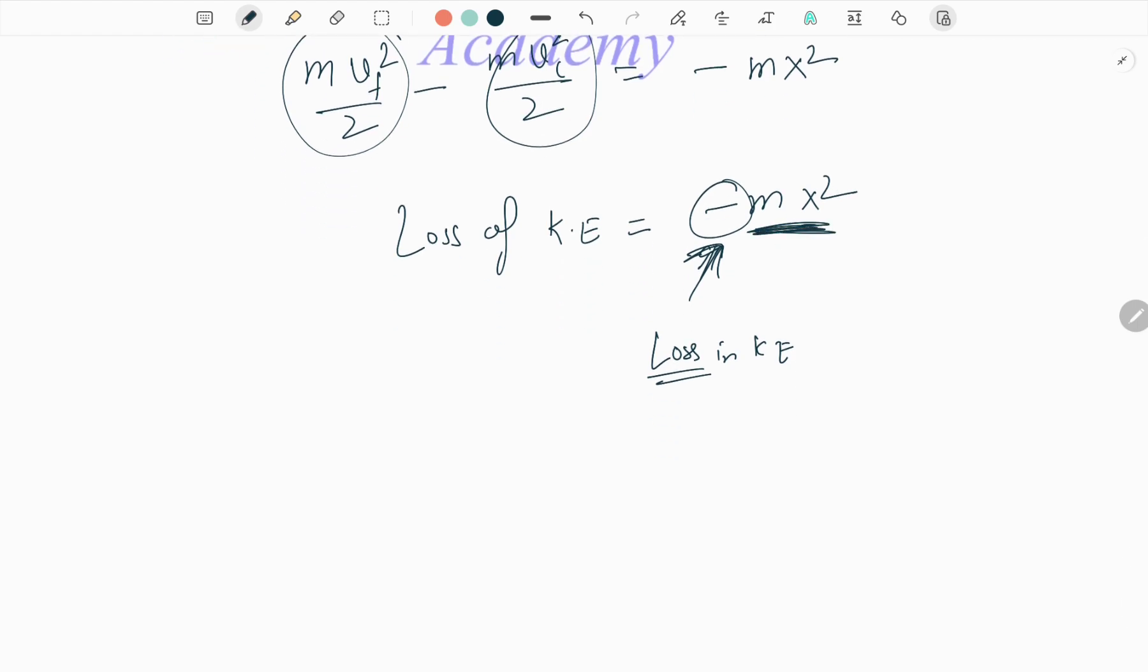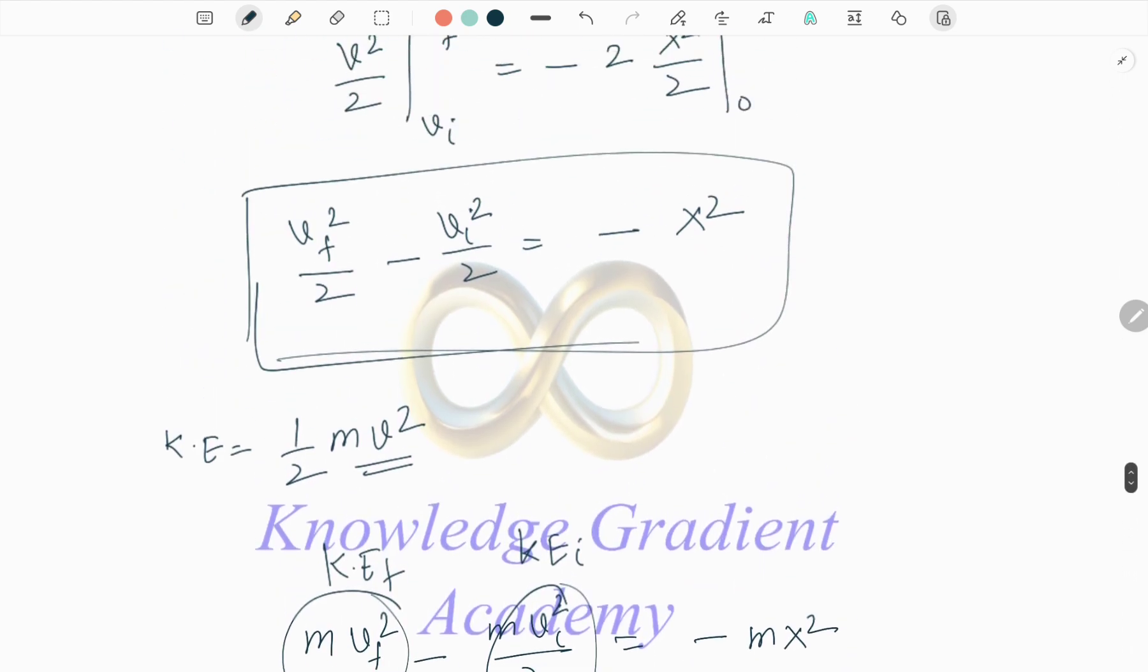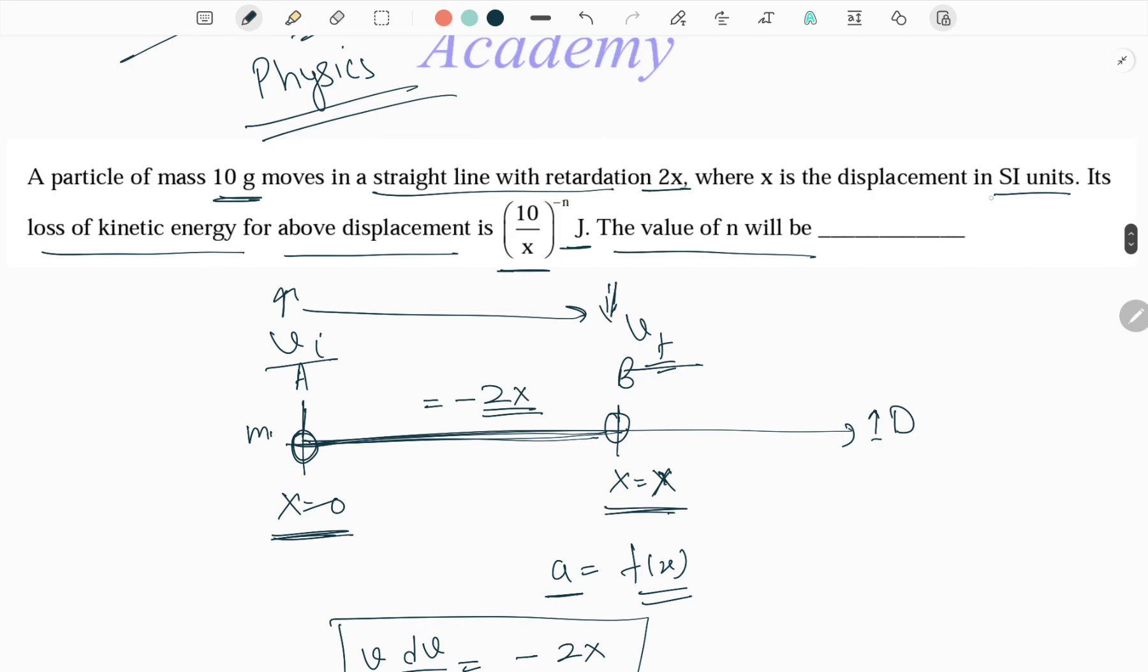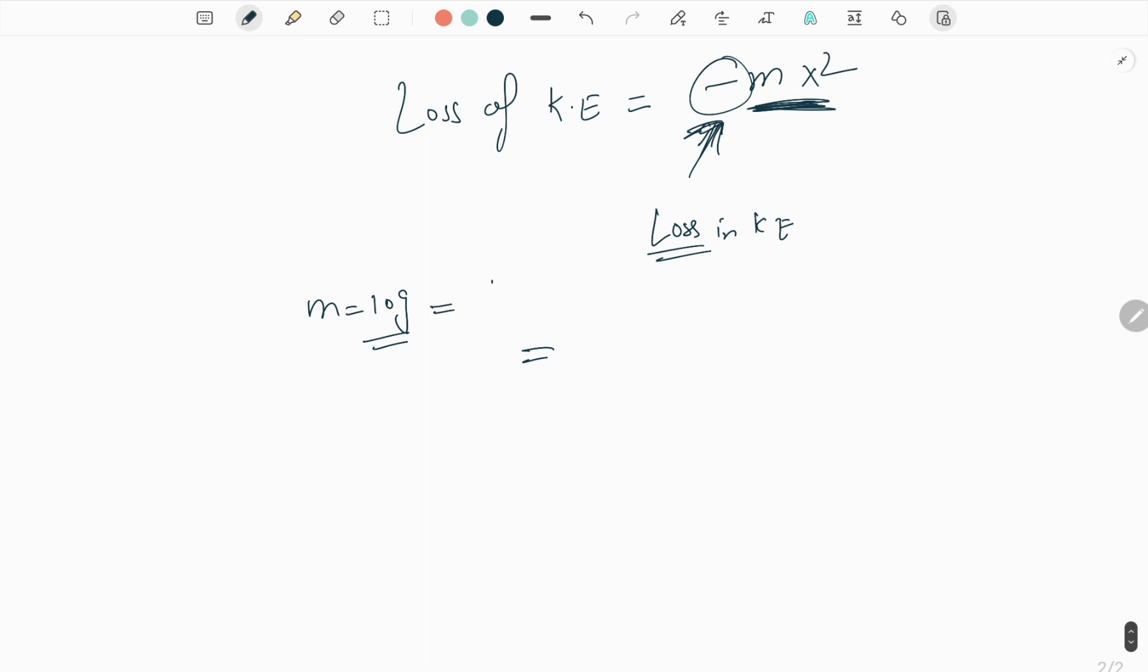Here mass is 10 grams, but in the question it clearly specifies that all units are in SI unit system. So convert mass into kg: 10 by 1000, that equals 1 by 100 kg.